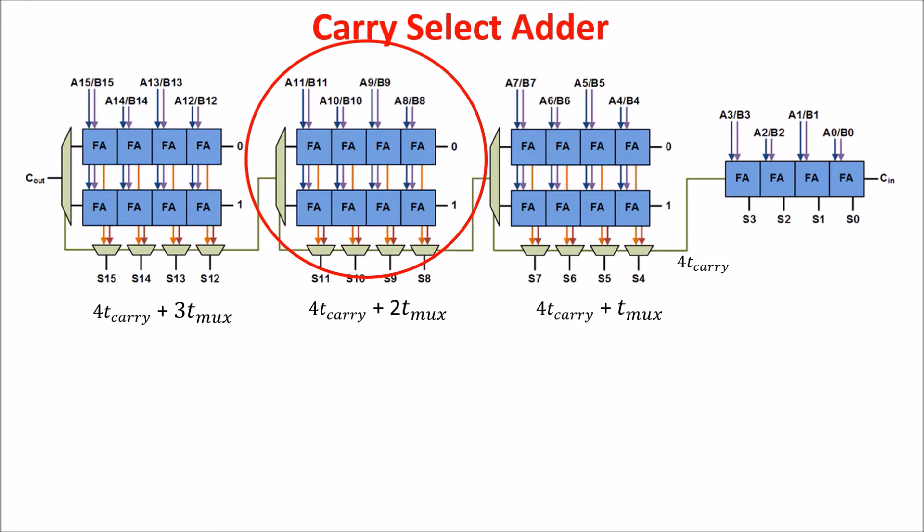If we assume that T-mux equals T-carry, we can design the N bits in the following way. We put K full adders in the first block and K plus one in the second because the second is waiting a T-carry more. Therefore, since each block waits a T-carry more than the previous one, we put a full adder more than the previous one.